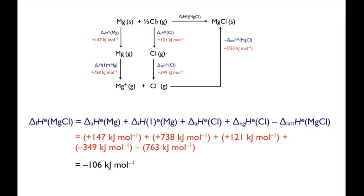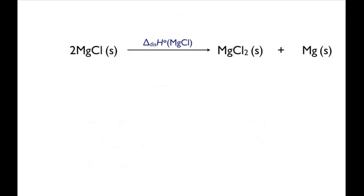Since we know that this compound doesn't exist, there must be another reason why it's unstable. Another possibility is that it's unstable with respect to disproportionation. This is decomposition to a higher and a lower oxidation state, in this case MgCl2 and Mg.